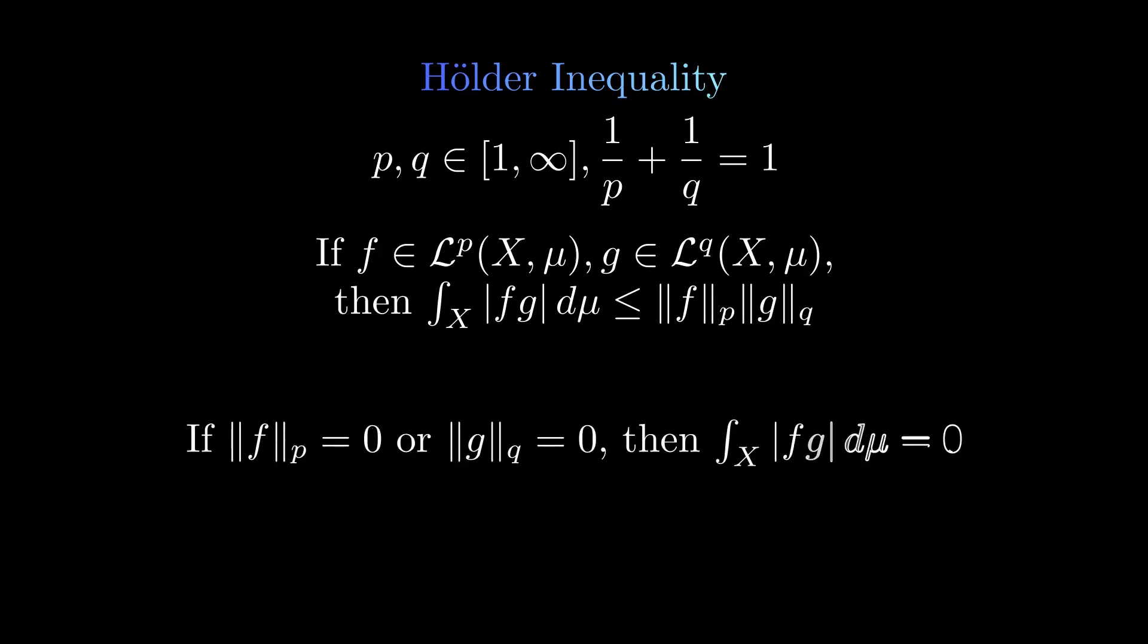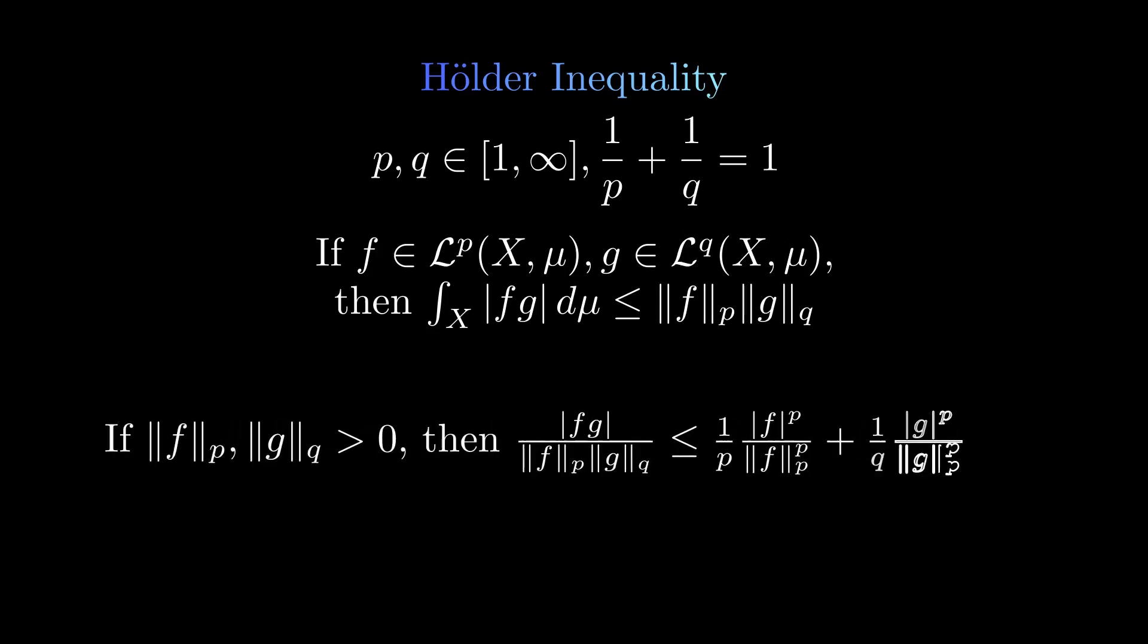First of all, notice that if the p-norm of f is equal to 0, then f must vanish almost everywhere. So, f times g vanishes almost everywhere, and the integral on the left side is equal to 0. The same argument applies if the q-norm of g is equal to 0. So, let's assume that the p-norm and q-norm are positive. By Young's inequality, we obtain the following inequality. By integrating and rearranging, we obtain Hölder's inequality.